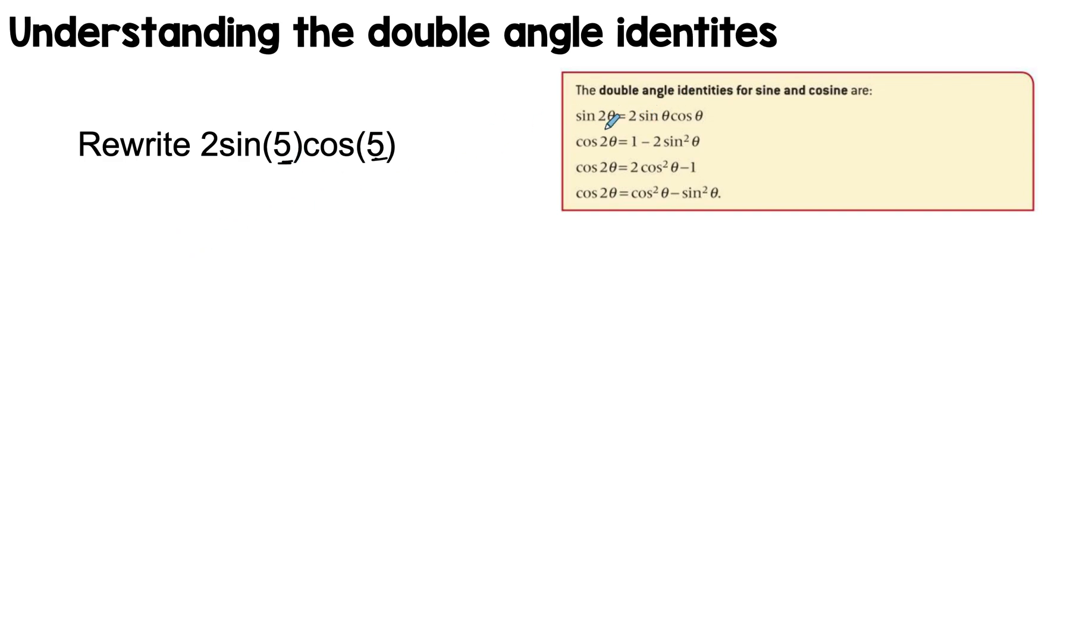So this 5 becomes your theta, and then this is doubled. This is exactly equal to taking sine of 2 times this 5, so 5 is your theta here, and then I can rewrite this as sin(10). So this is me rewriting it.